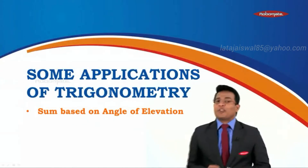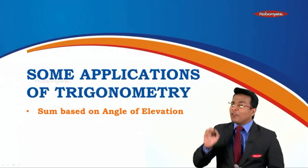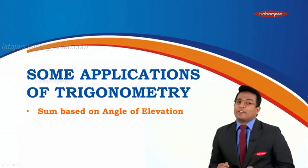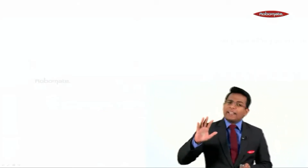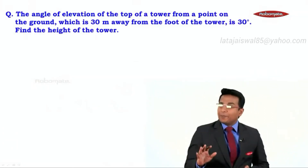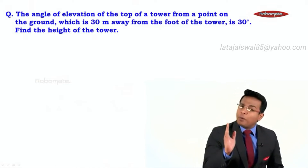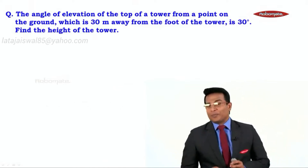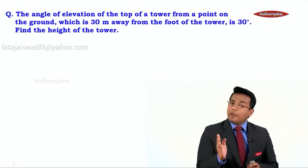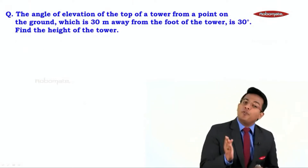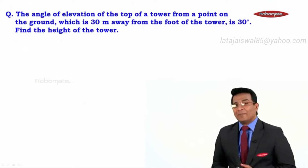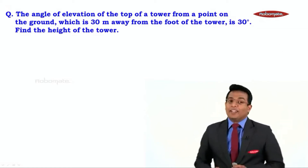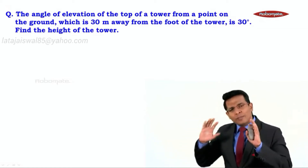From this chapter on applications of trigonometry, we are doing a very beautiful sum based on angle of elevation. The sum says: the angle of elevation of the top of a tower from a point on the ground which is 30 meters away from the foot of the tower is 30 degrees. Find the height of the tower.